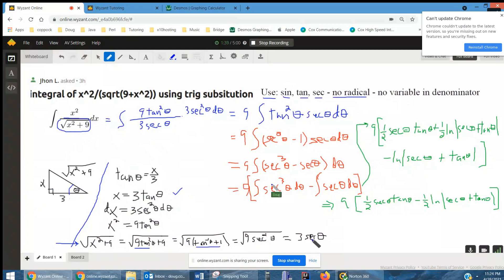And then replace tangent squared theta plus 1 with secant squared. Now I can take the square root and get 3 secant theta. And now I have everything I need to substitute.